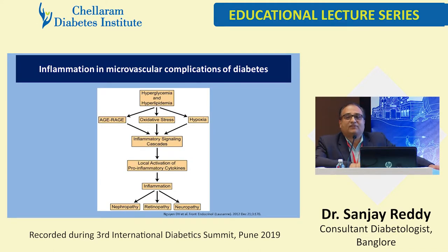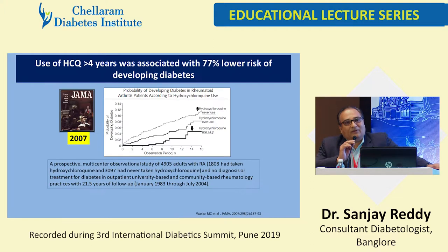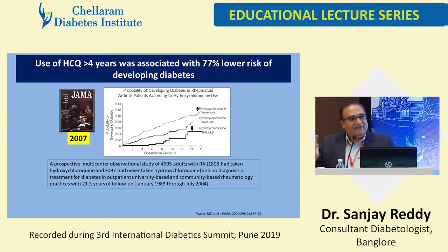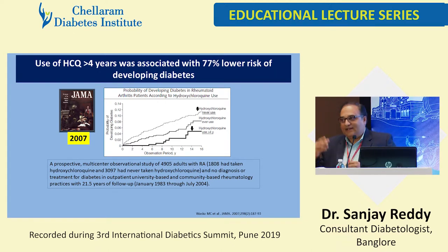Inflammation and microvascular complications of diabetes — we all know that inflammation is one of the key pathways. Now, this is an observation which came out in JAMA a long time ago. They saw that patients who received hydroxychloroquine as a DMARD for rheumatoid arthritis, when followed over approximately 21 years, developed less diabetes than people who didn't use hydroxychloroquine as the DMARD.